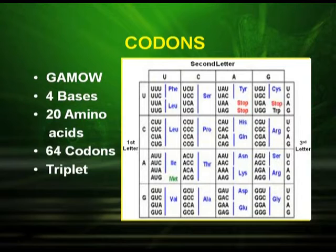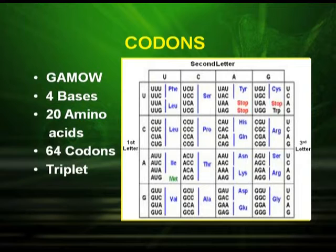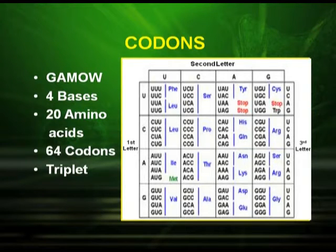In the genetic code we use the term codons. The picture gives a dictionary of the genetic code where you have a first letter, second letter, and a third letter — these three letters combine to form a codon. This was given by Gamow. We know there are four bases — two purines and two pyrimidines — in DNA and RNA, and there are twenty amino acids. By permutation and combination, there are sixty-four codons and each codon is a triplet, meaning it is signified by three bases.